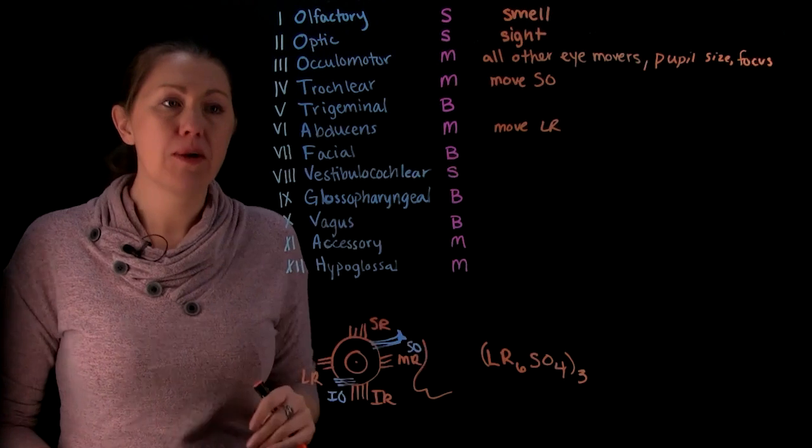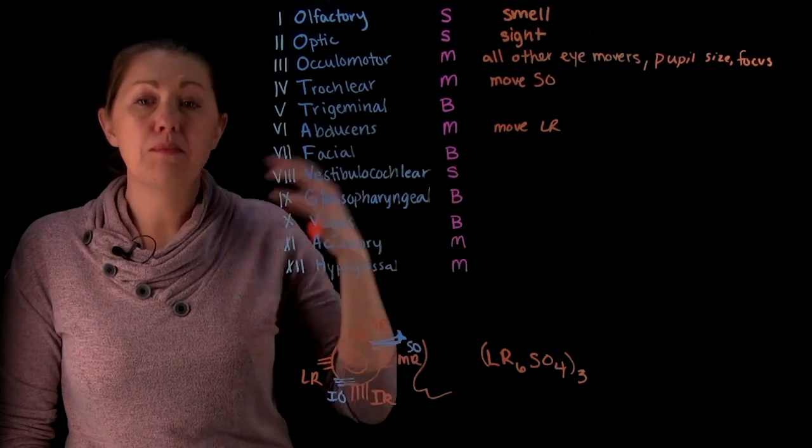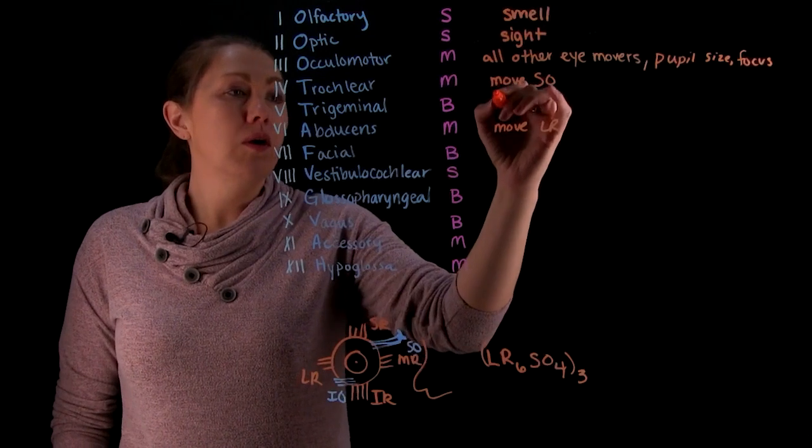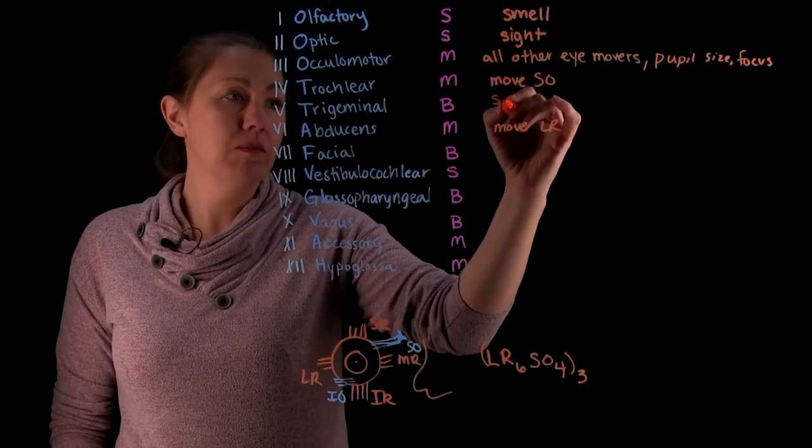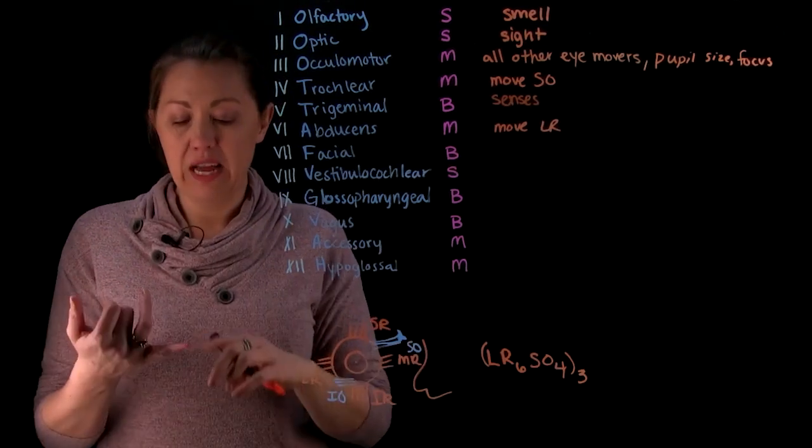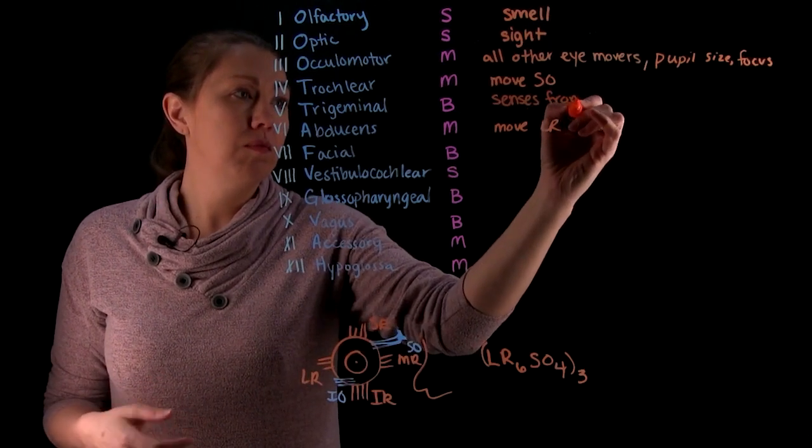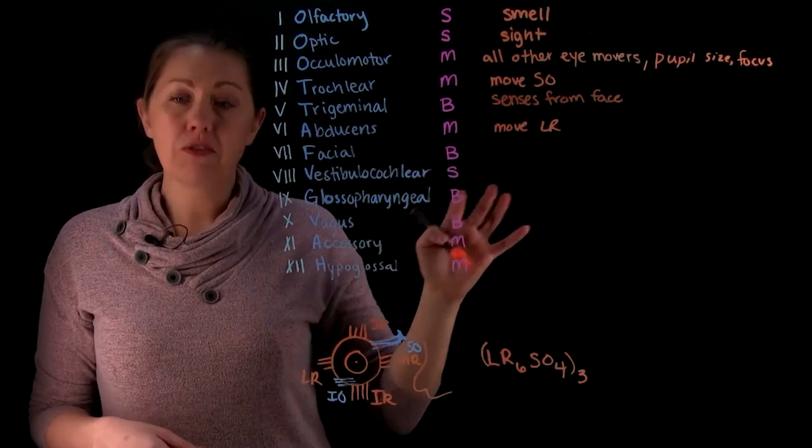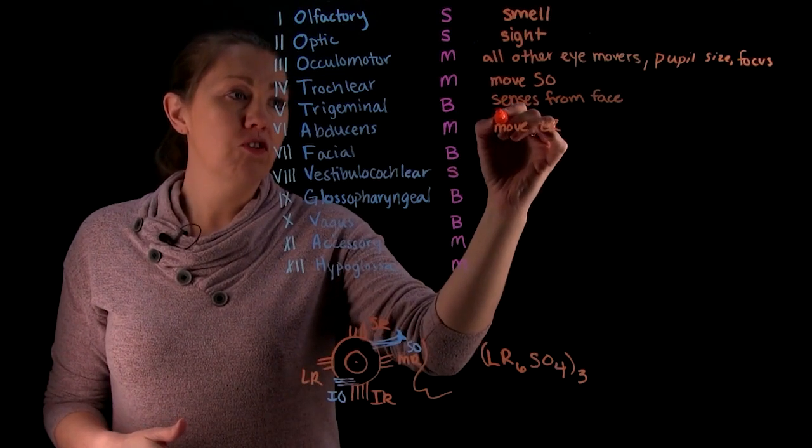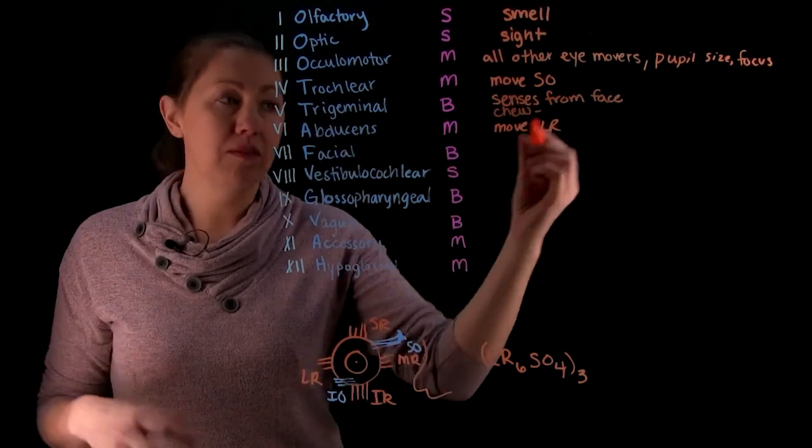All right, so then let's now go to trigeminal. So trigeminal, as we mentioned, is a branched one that goes across the face into these three areas. It is a both. So it'll have a motor component but it will also have a sensory component. So with your sensory, it's sense from the face. We call these general senses because they're coming from skin. So these are the things like temperature, pain, and touch. So that's your sensory component. Motor component is it has a role in mastication or chewing. So the motor part is chewing. Which means then you're going to control muscles for mastication. So things like temporalis and masseter.